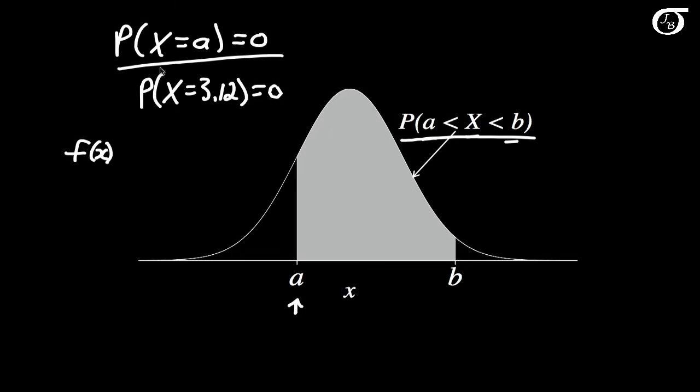One implication of what we just talked about here is that this probability would be the same as saying the probability that the random variable x is greater than or equal to a and less than or equal to b. We can switch less than or equal to with less than. It doesn't matter because the probability the random variable x is exactly equal to one specific value is 0.